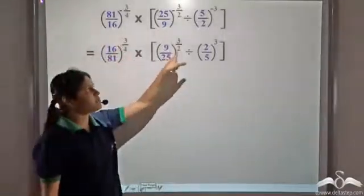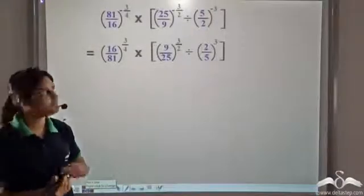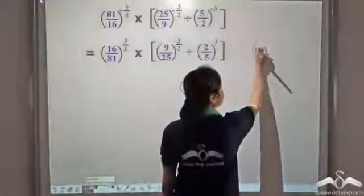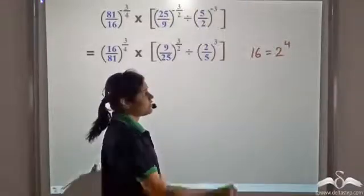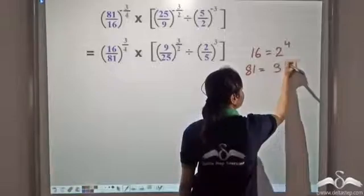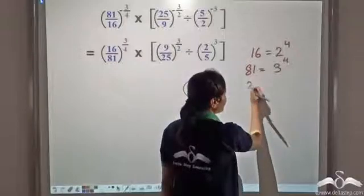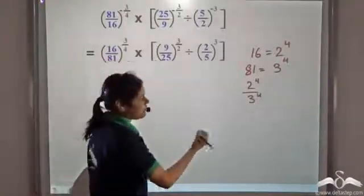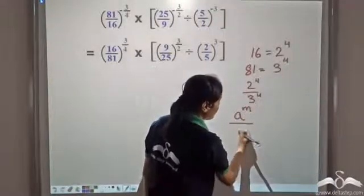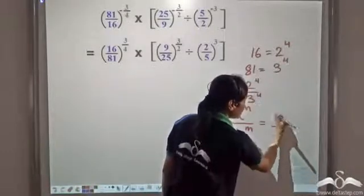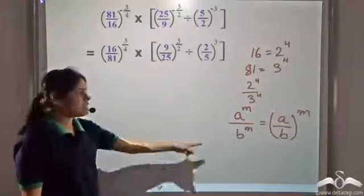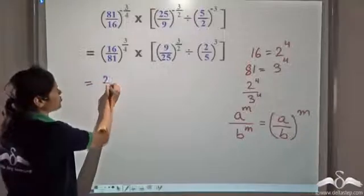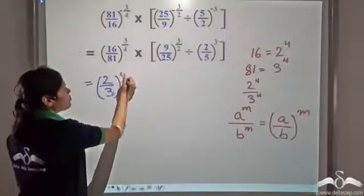Now we have fractional exponents here, so let us simplify further. For 16 by 81 whole raised to the power 3 by 4: 16 is equal to 2 to the power 4, and 81 is equal to 3 to the power 4. So 16 by 81 is 2 to the power 4 by 3 to the power 4. Using the law a to the power m divided by b to the power m equals a by b whole to the power m, we write this as 2 by 3 whole to the power 4 times 3 by 4.